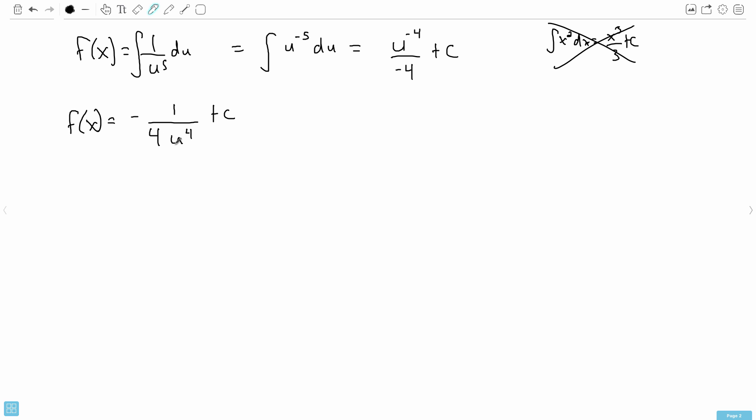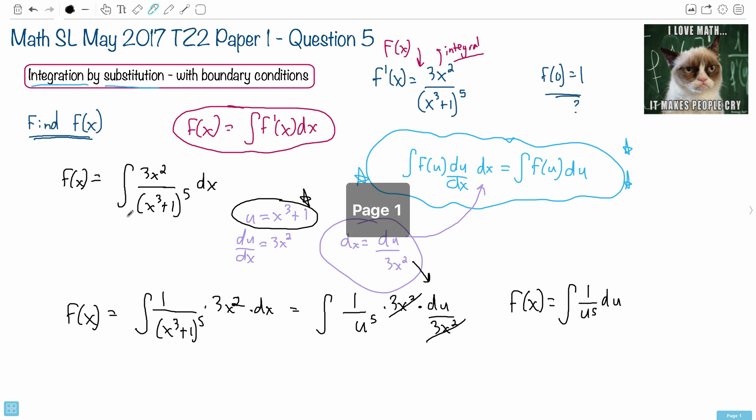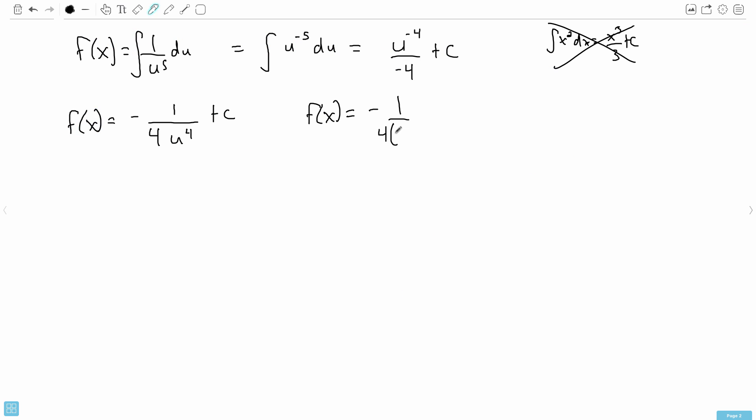Now, I've got to fill in what u is. So f of x equals minus 1 over 4 times, and instead of u, don't forget, we have that u is x cubed plus 1. So we put that in here. So x cubed plus 1, because that's what u was. And don't forget, we've got to do that to the power of 4. Don't forget that one. And plus c.